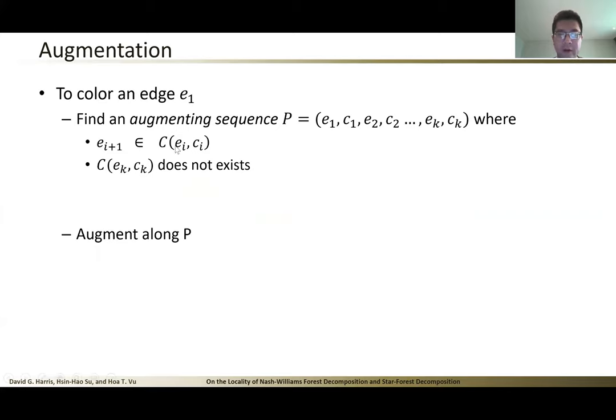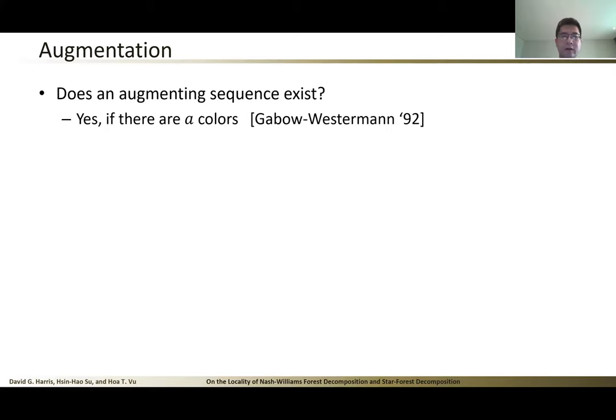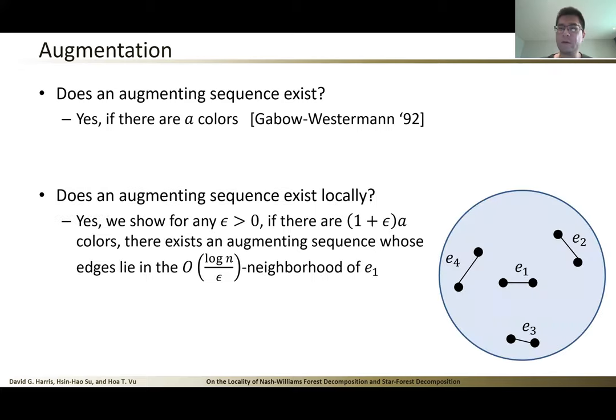This is just a formal definition of such an augmenting sequence. Note that E_{i+1} and E_i don't have to be consecutive. So C_i means the cycle created by coloring E_i is color C_i. They don't have to be consecutive. This is the definition of the augmenting sequence. But now the question is whether an augmenting sequence always exists. Gabow and Westermann show that if there are a colors, then it always exists. So we can color the edges one by one by using this augmentation procedure. But here, what we care about is whether the augmenting sequence lies in the local neighborhood of E1. What we have shown is that for any ε > 0, if we have (1 + ε)a colors, then there always exists an augmenting sequence whose edges lie in the local neighborhood of E1. This is what we have shown in our structural theorem.